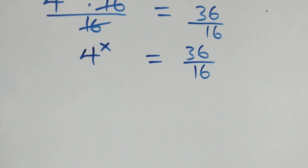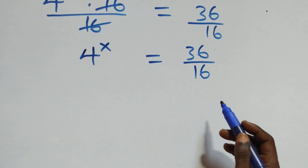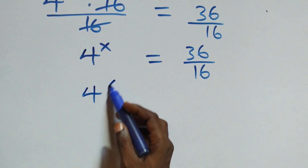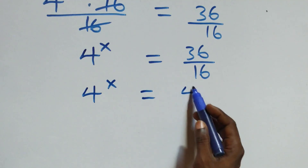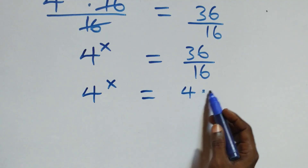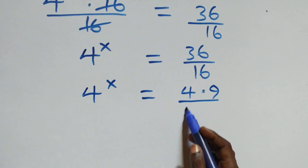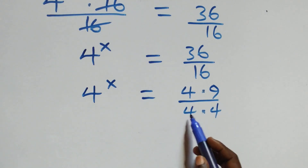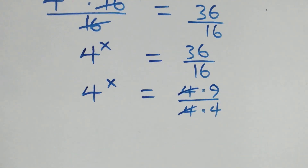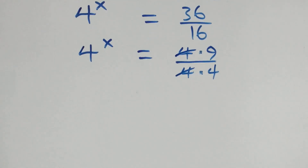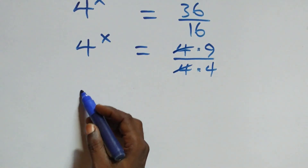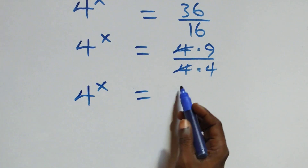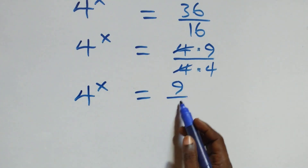From what we have here, we can write this as 4 raised to the power x equals 4 times 9 over 4 times 4. The 4s cancel each other, and this becomes 4 raised to the power x equals 9 over 4.